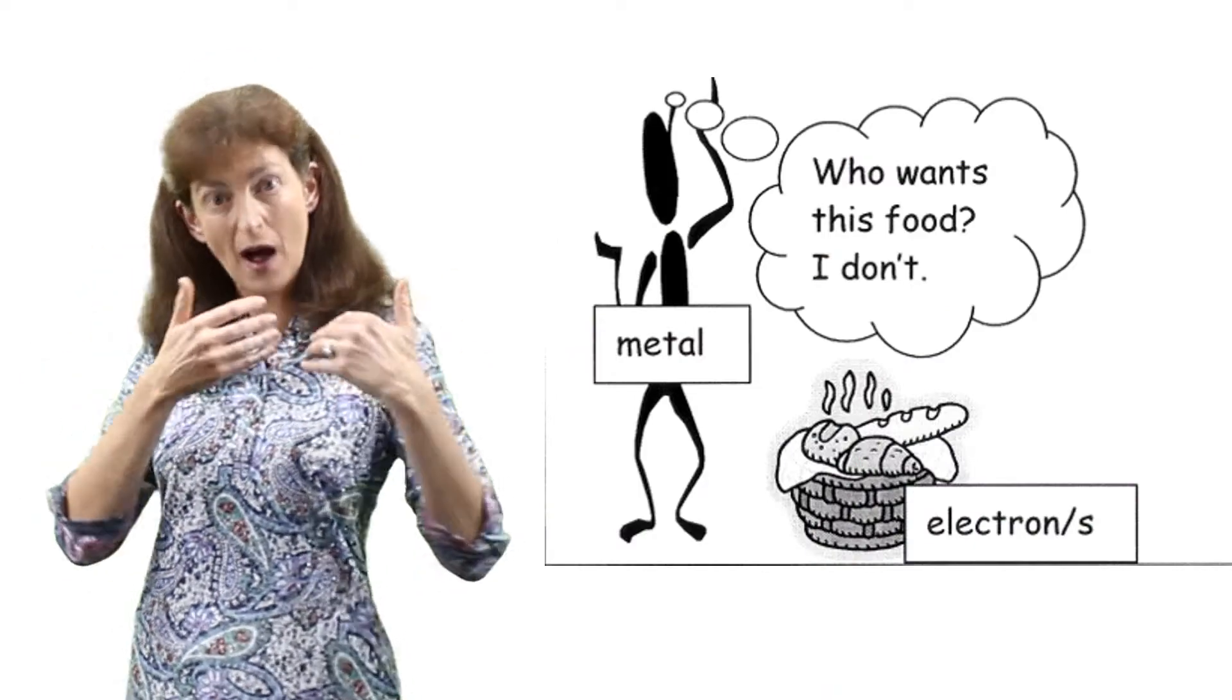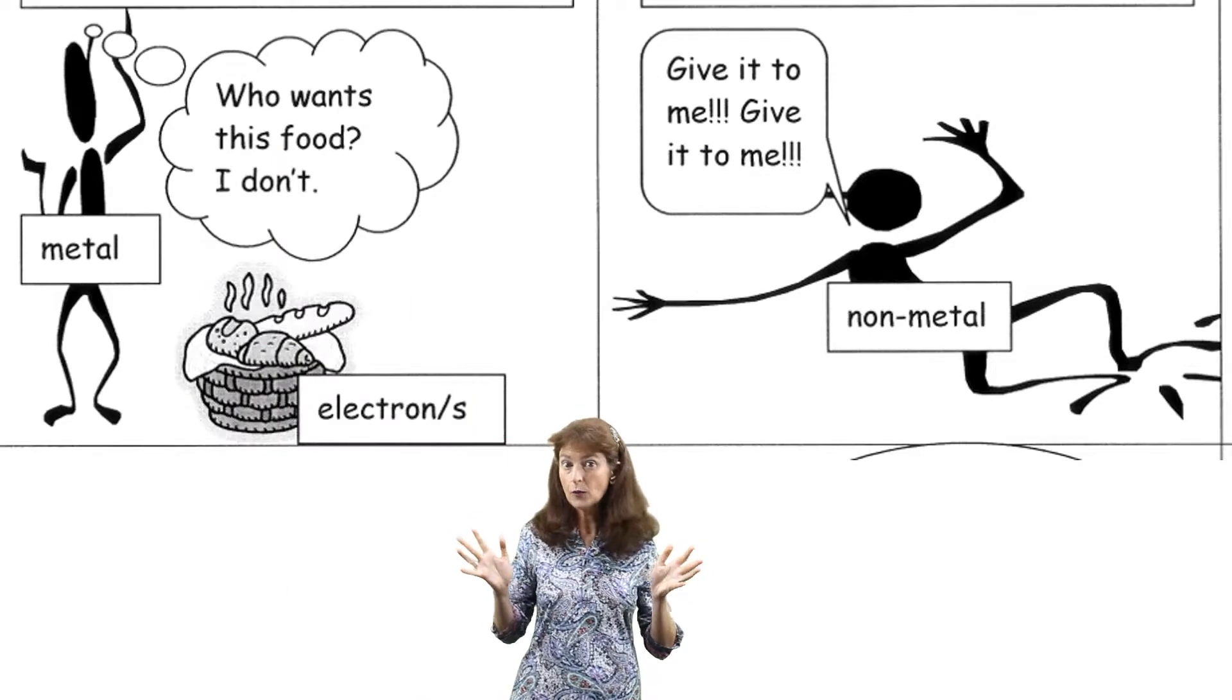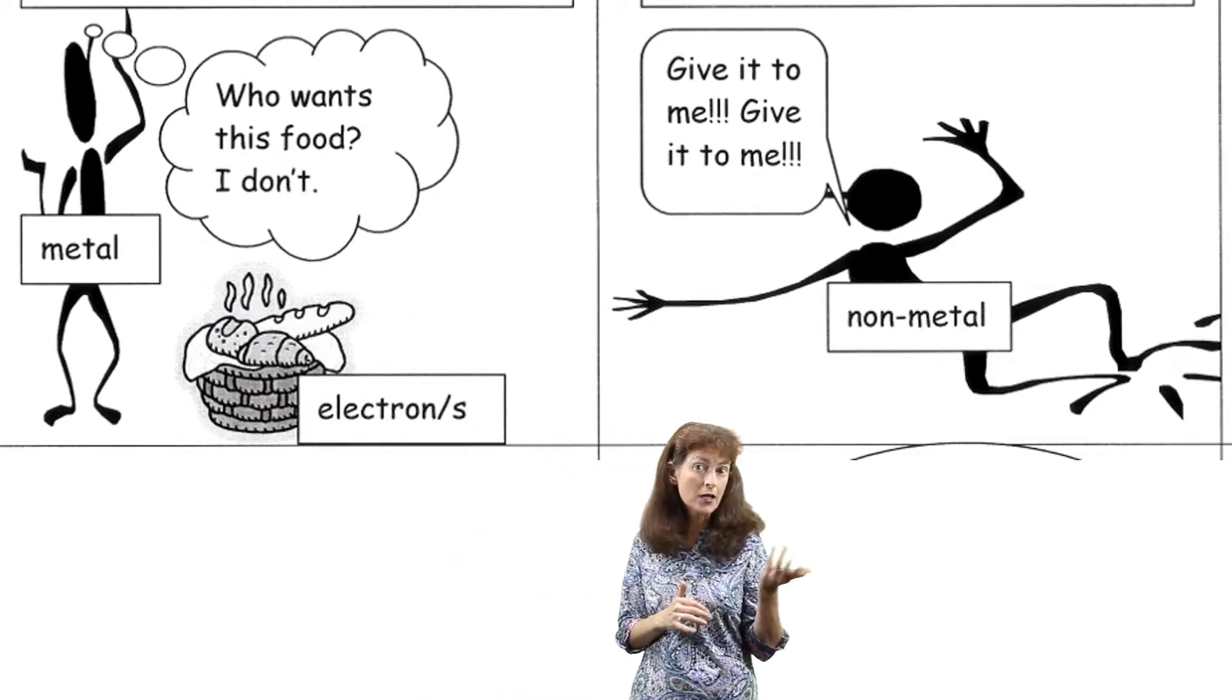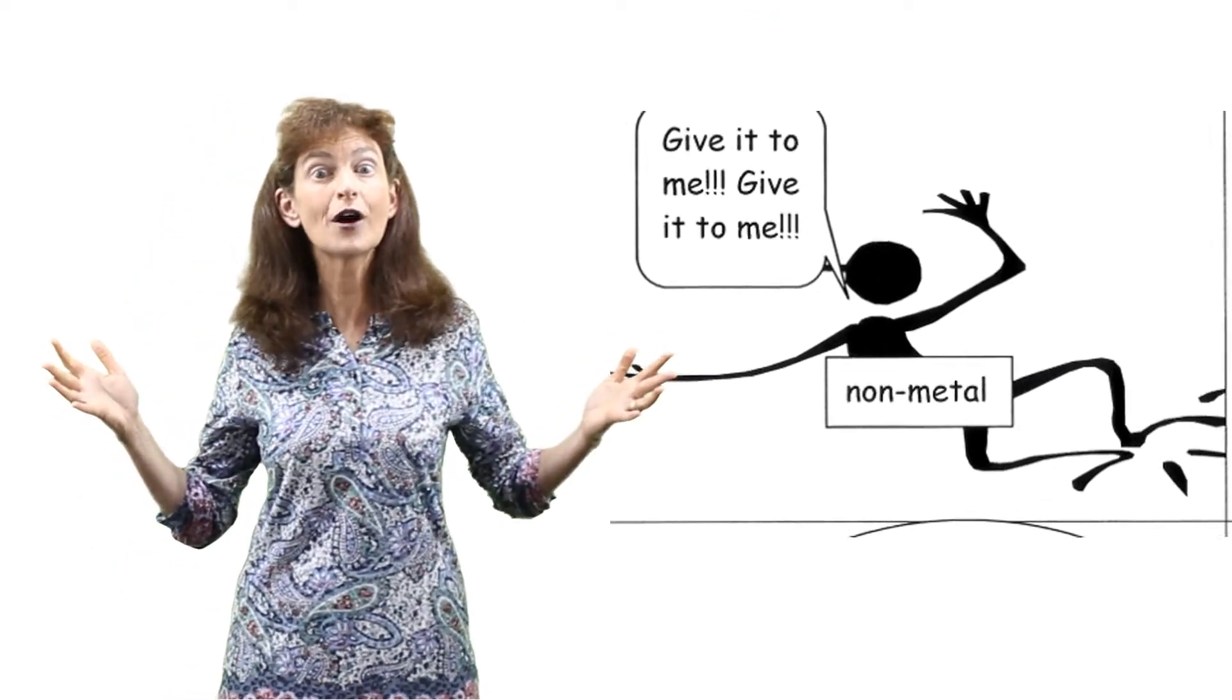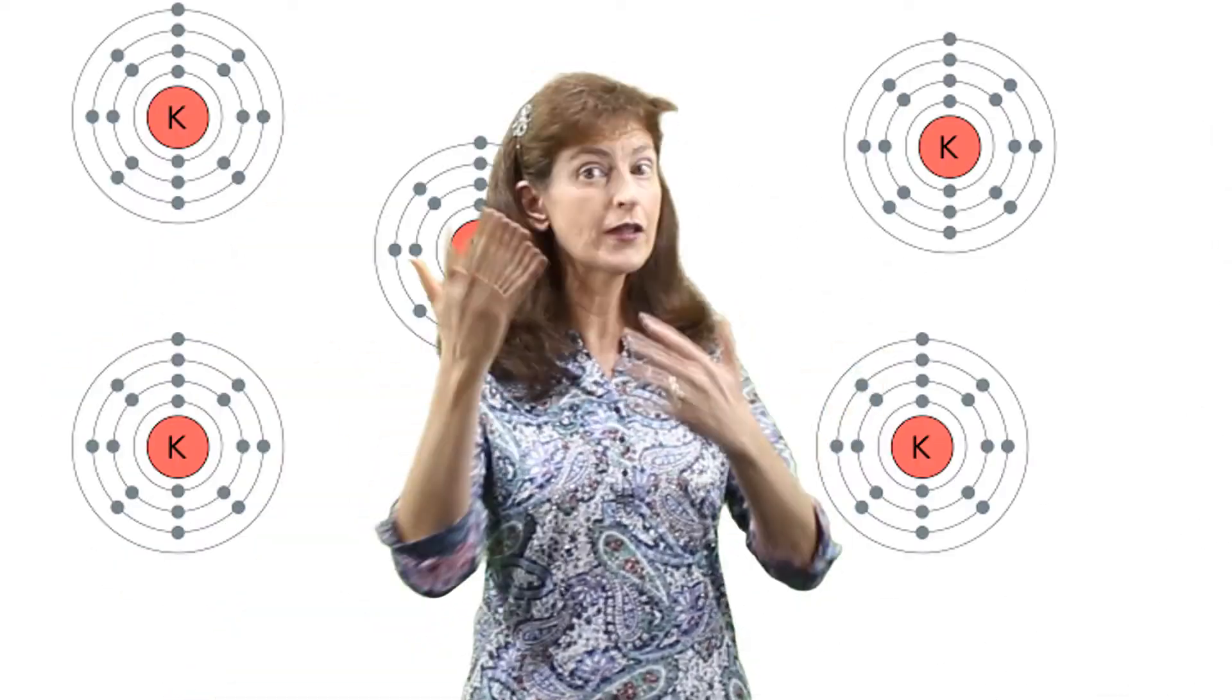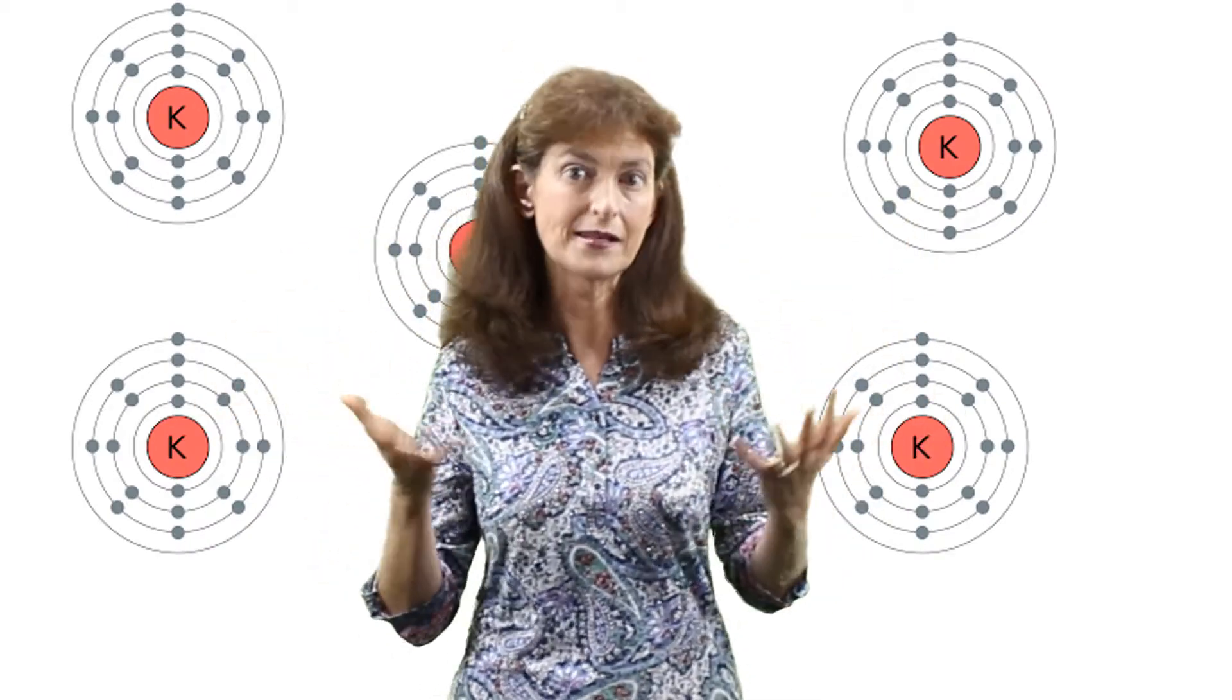Metals react by donating electrons. That works out well when there's a non-metal around to receive it. Because non-metals are very greedy. But what about if there are no non-metals around? What about if the only neighbors are other metals? As happens in some metal.